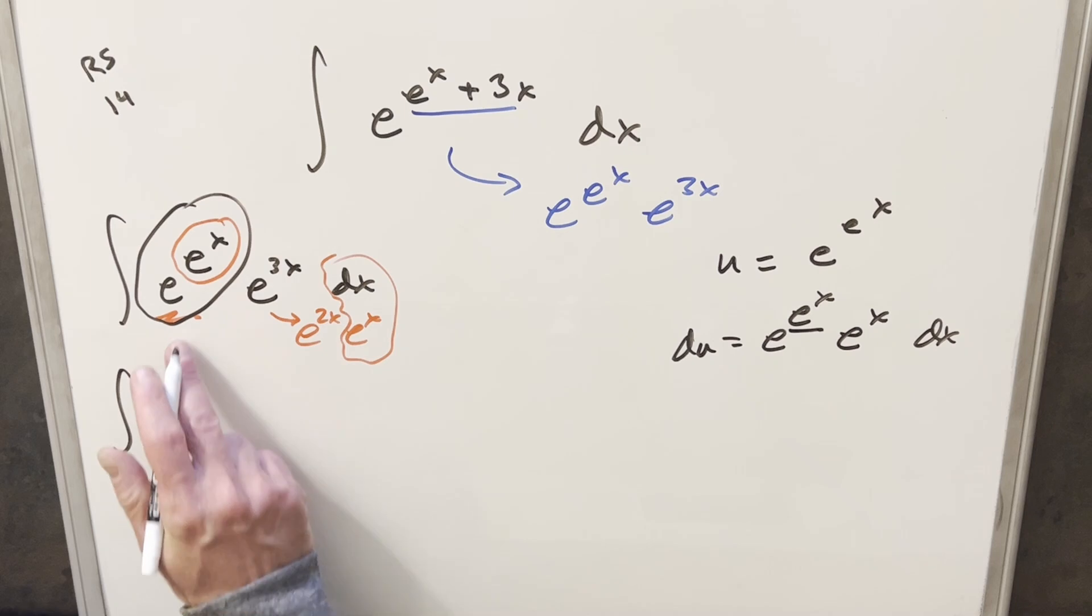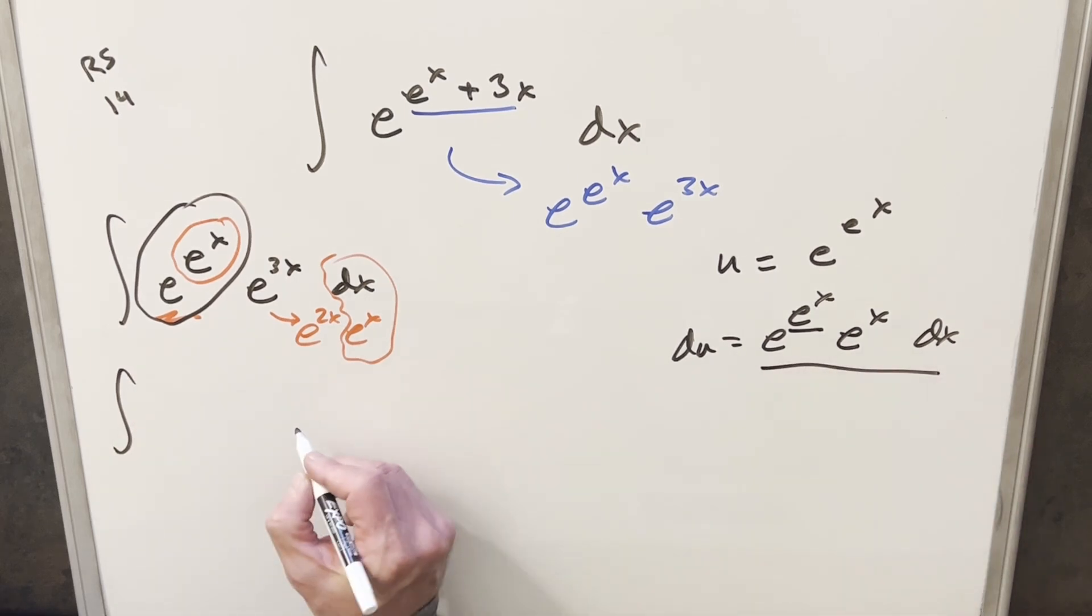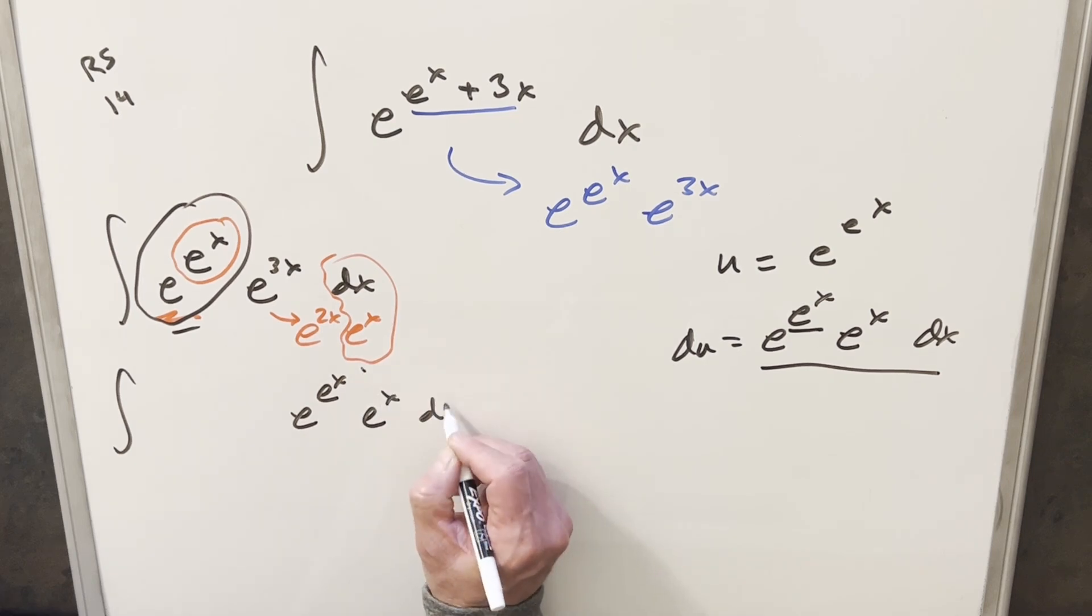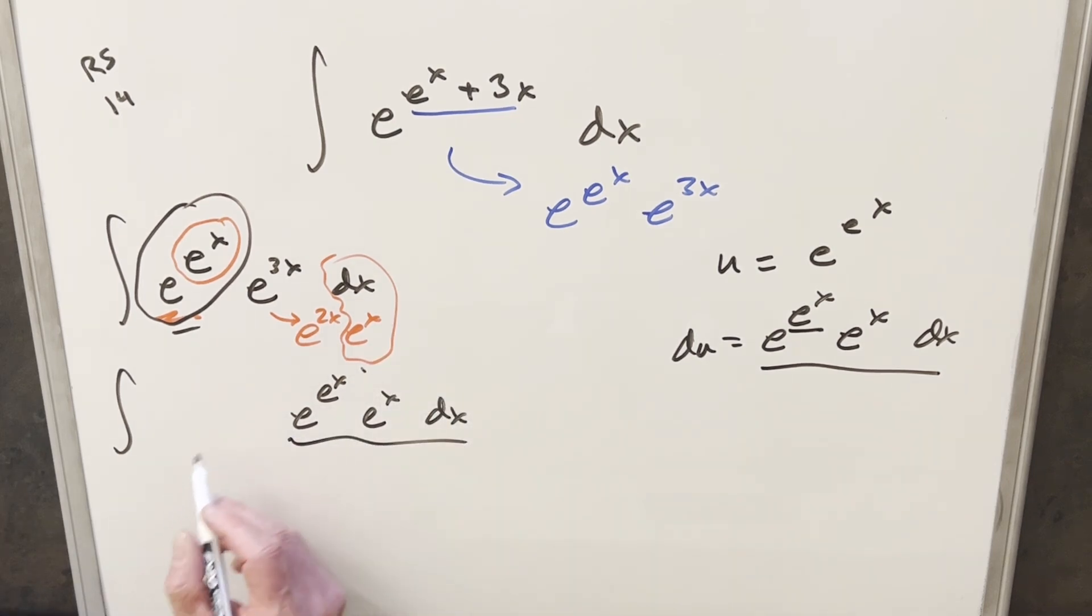So now to set this up, let's just reorder things. First, I want to get this du at the end. So I'm going to write this as e to the e^x. We'll use this one, e to the e^x, e to the x dx. And now we have du right there. Now we just have to remember this e^x.